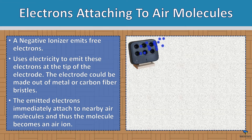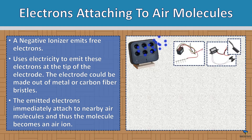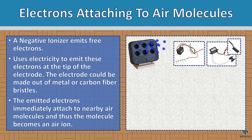Electrons attaching to air molecules: an ionizer emits free electrons. It uses electricity to emit these electrons at the tip of the electrode. The electrode could be made out of metal or carbon fiber bristles — the same bristles you would find in a brush. The emitted electrons immediately attach to nearby air molecules, and thus the molecule becomes an air ion.